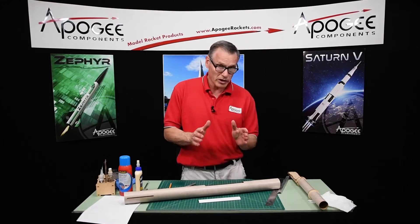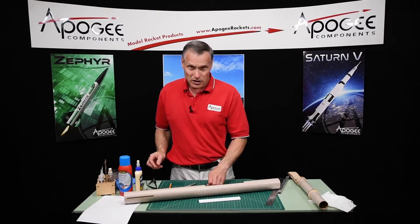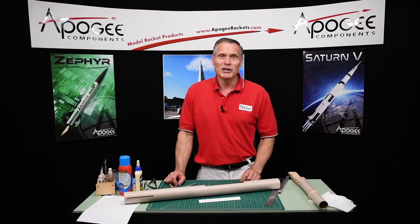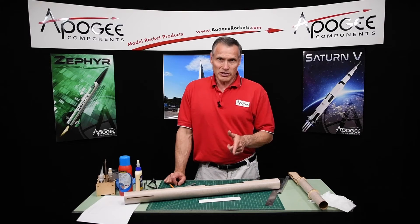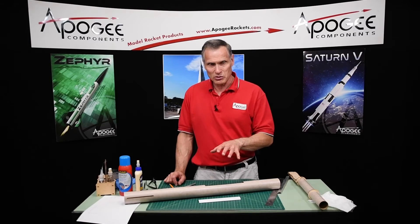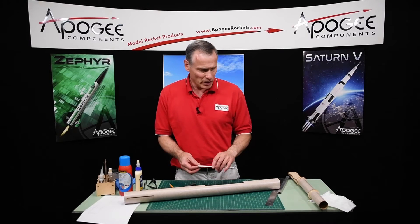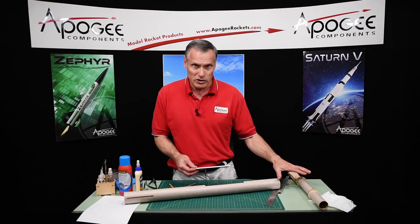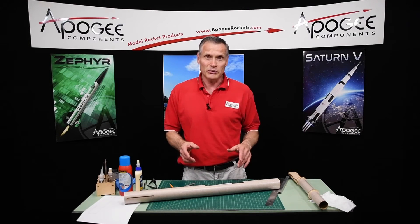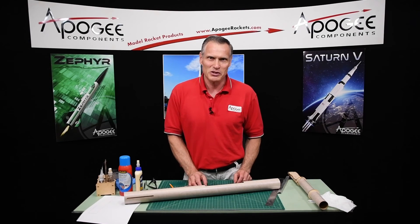So my name is Tim Van Milligan. You're watching the Apogee Rocketry Workshop. We're building the Terrier Sandhawk, and this is the Sandhawk part. In our next episode, we're going to finish the cover, and hopefully the glue will be dry over here where I can slide this in and glue it into place. So until then, may the winds be light, may the skies be blue, and may all your rockets fly straight and true.